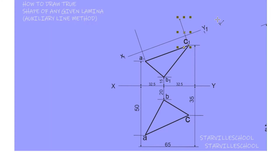Having done that, the next thing is to get the length from the plan view. We are going to get the length from A to the XY line, which has already been given here as 50 millimeters.